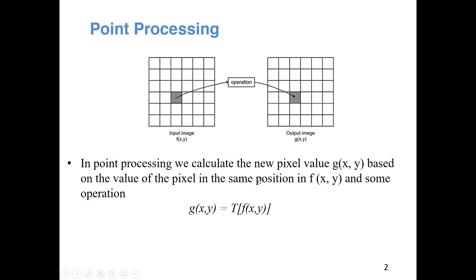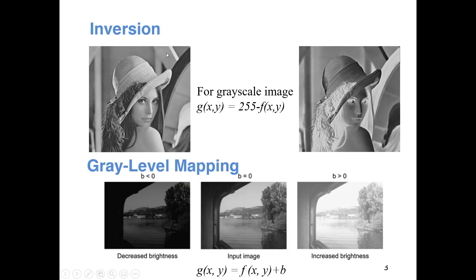For example, we have the inversion operation, which we have already done in detail. When you do the inversion operation, the pixel value in the output image is 255 minus the pixel value in the input image. Another example of point processing is gray level mapping, where you take an input pixel value and add a bias. Depending on whether the bias is positive or negative, you get a picture with increased or decreased brightness. These are what we call point processing.